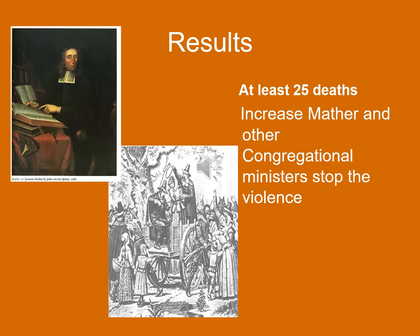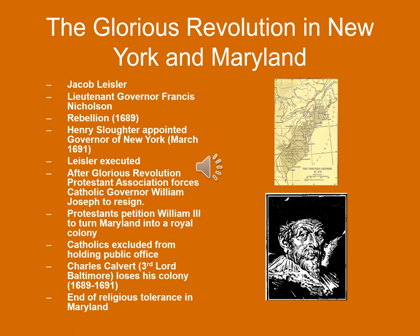Gradually the hysteria died down. The Glorious Revolution also had ripple effects in New York. When Lieutenant Governor Francis Nicholson, who was in command in New York, learned of the uprising in Boston, he didn't immediately announce what had happened. Jacob Leisler, a leader of the local militia, rose up in rebellion in 1689 against Nicholson and overthrew him. When Henry Slaughter was appointed governor of New York by the new King William III and arrived in March of 1691, Leisler demanded to see proof that Slaughter had been sent from King William and not from the deposed King James. Ultimately, Slaughter laid siege to Leisler and his men, and Leisler was captured and executed.